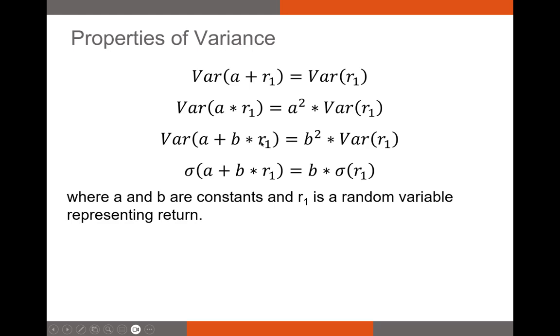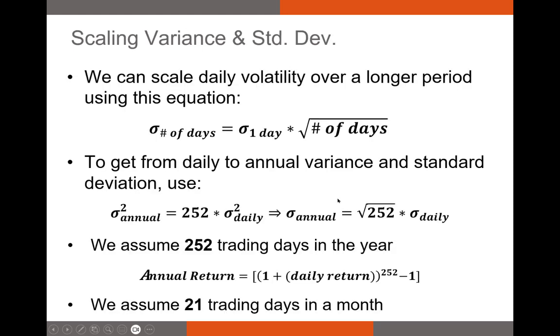Another thing here, if we have a constant plus constant times our return of stock one, this a is going to stay the same, but the b, this is going to act like a scalar. So we need to take it outside the variance, and this becomes b squared times variance. And then finally, if we have the standard deviation of a plus b times r1, the a is a constant. We're just adding it to everything, so it doesn't change the volatility. But the b, it does affect the volatility. So we're going to take it outside the parentheses, and we get b times standard deviation of return one. So a and b are constants, r1 is a random variable representing return.